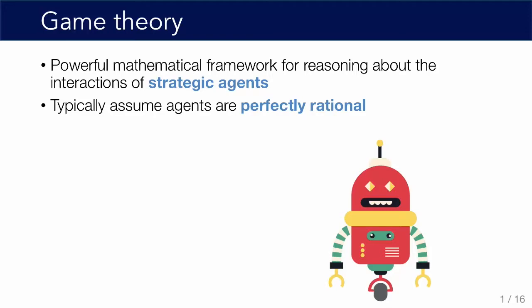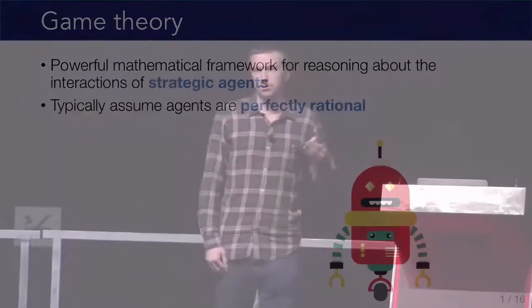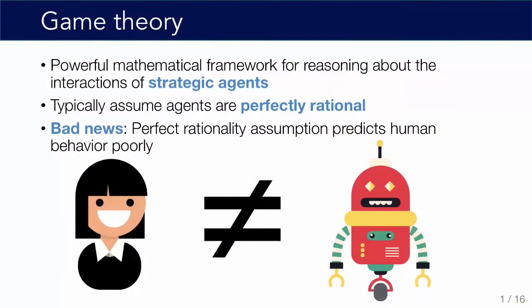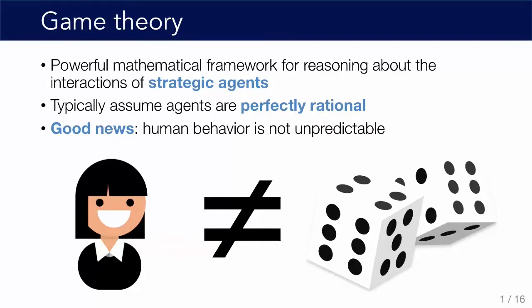Typically in game theory, what we do is we assume that these agents are perfectly rational. And that may be totally reasonable in certain circumstances, but if you're trying to use game theory to make predictions about human behavior, it turns out that this just leads to really poor descriptions of what actually goes on. The good news is that people aren't totally unpredictable — it's not like they're uniformly randomizing over their actions. It's just that the perfect rationality assumption is a really poor description of what's going on in people's heads.